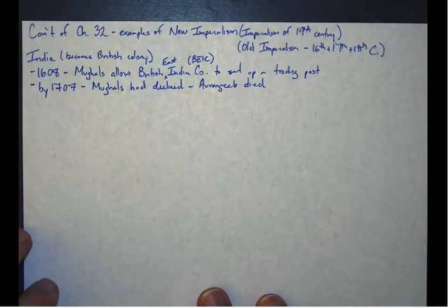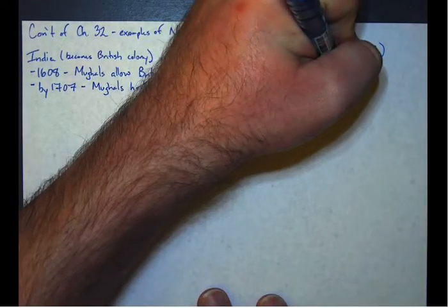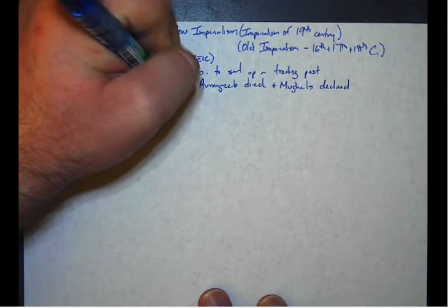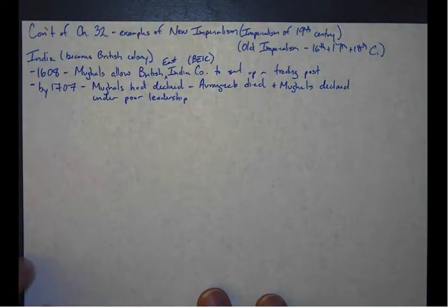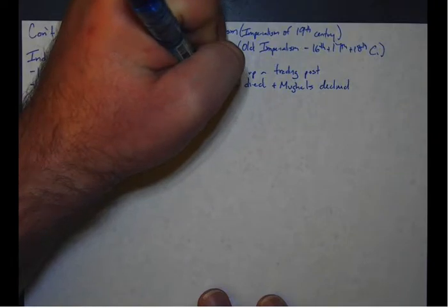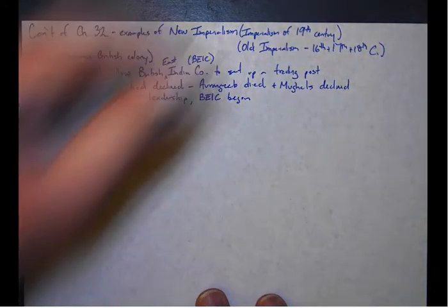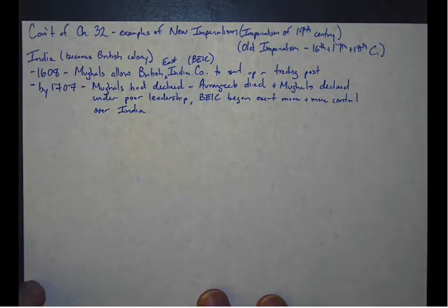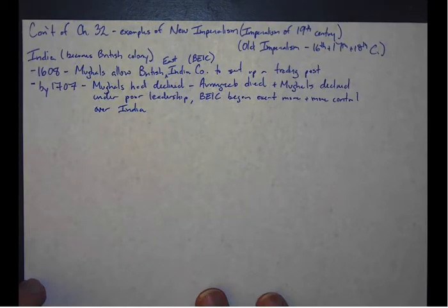Aurangzeb died and the Mughal Empire started to decline under poor leadership. And that allowed the British East India Company to take over. The British East India Company began to exert more and more control over India. Think of this as if Apple were to take over the government of California. It's pretty much the same thing.